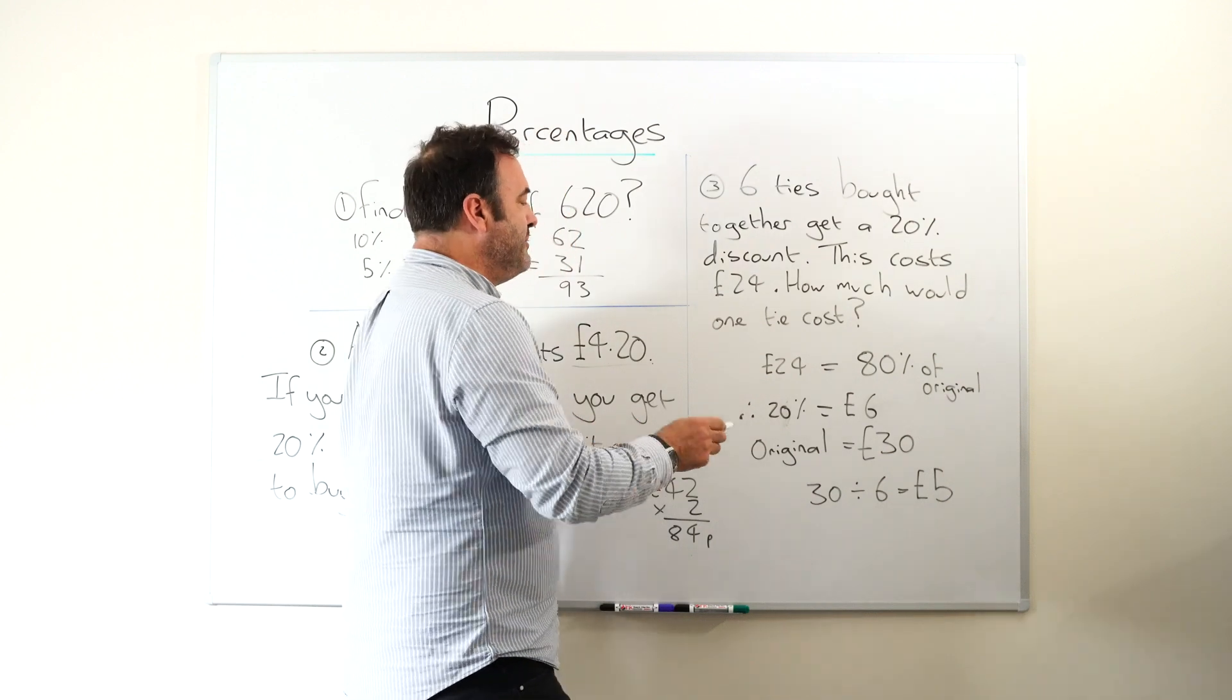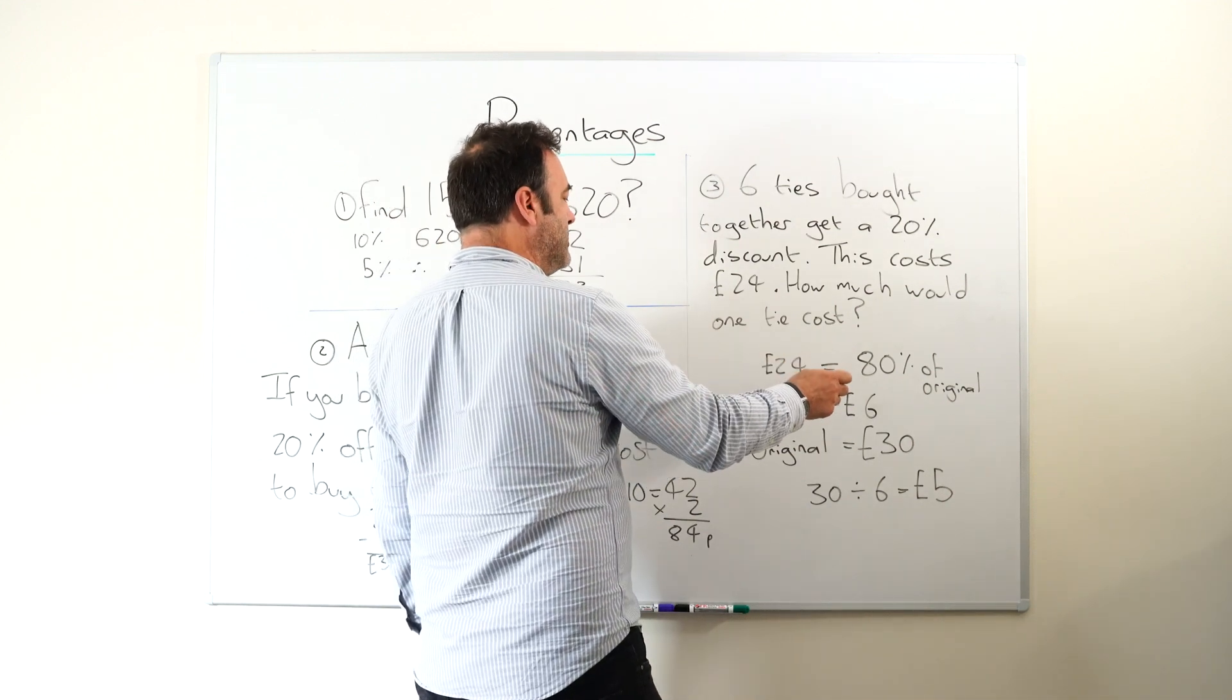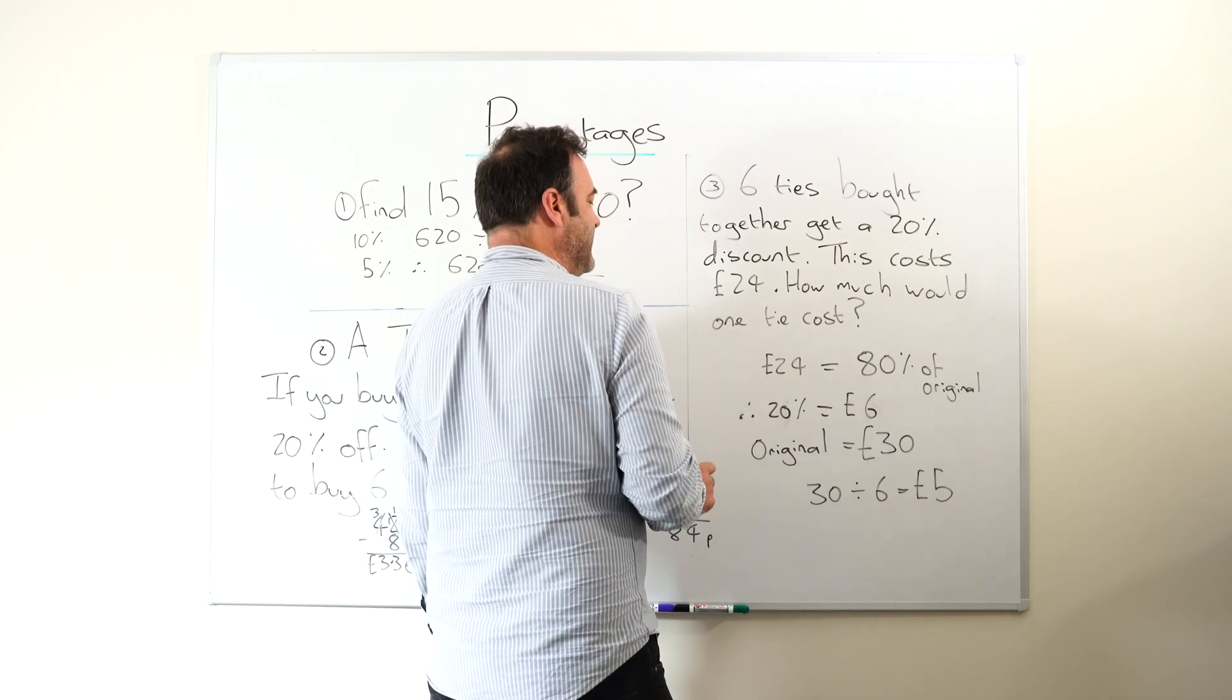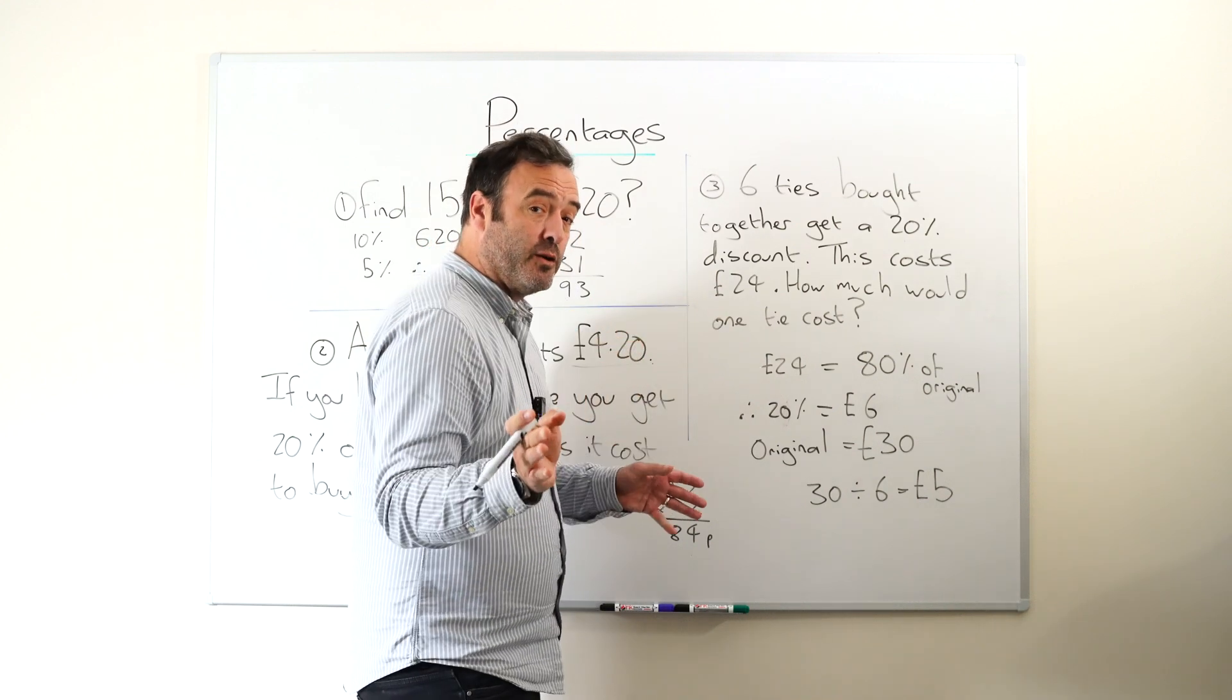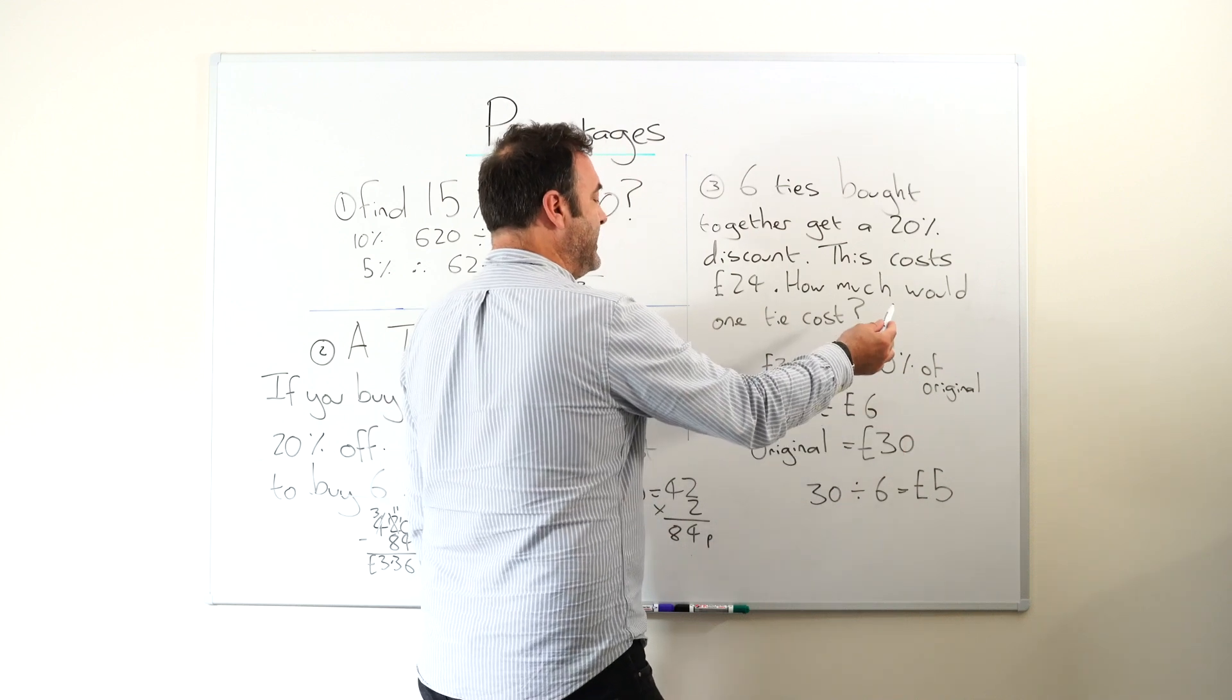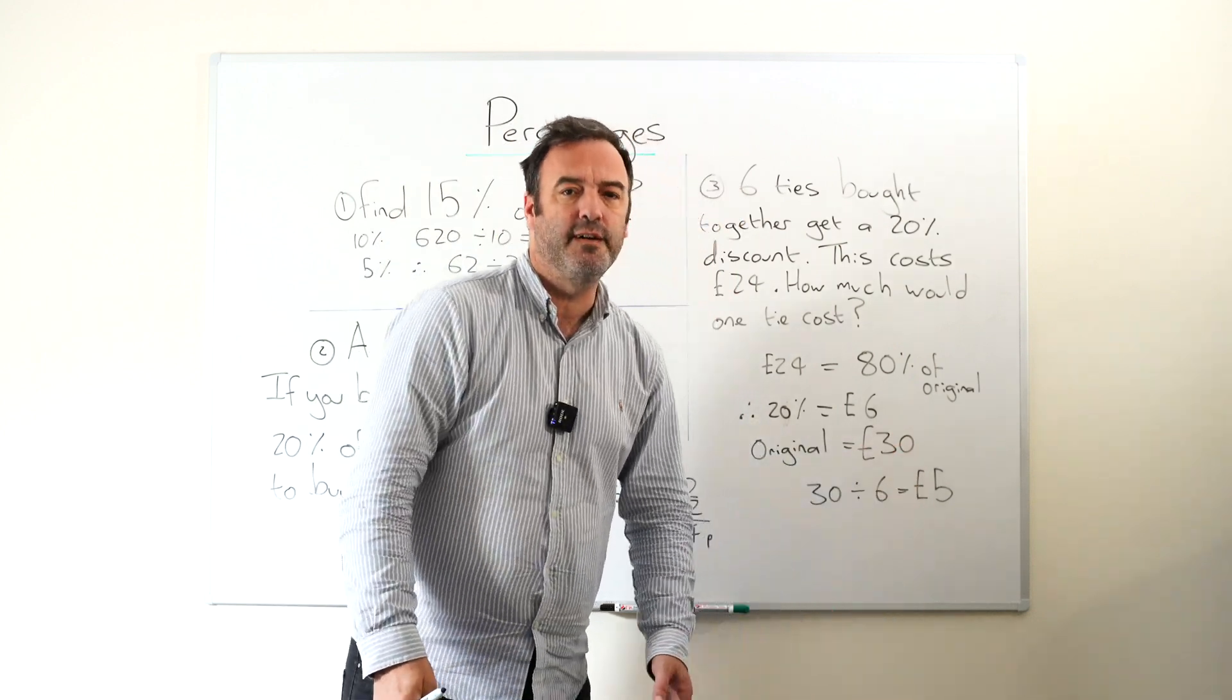Because we know that 24 pounds is actually 80% of the original, we could therefore work out that 20% is six pounds, because there are four lots of 20 in 80. 24 divided by four is six pounds. Are you following me? Add that together, we know that originally it was 30 pounds without any discount. Now it's nice and easy, we just divide that by the six. Now we know it's five pounds.